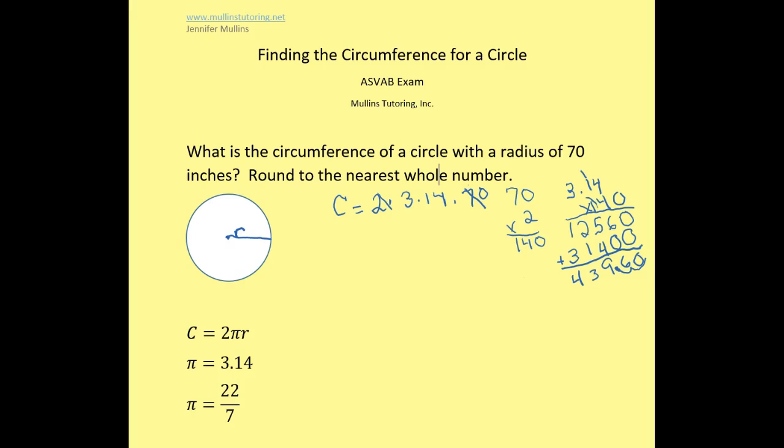Now they tell me to round to the nearest whole number. And the 6, the number to the right of the decimal, is going to determine whether I round up or keep it the same. Since it's 6, I'm going to round up because anything 5 or greater, we would round up. So I'd end up with 440 inches.